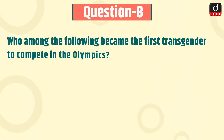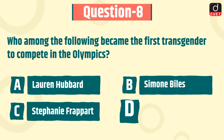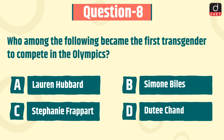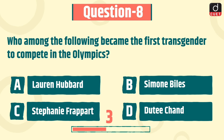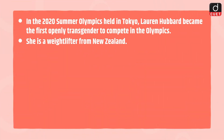The next question is: who among the following became the first transgender to compete in the Olympics? Lauren Hubbard, Simone Biles, Stephanie Frappart, or Dutee Chand? The correct answer is option A, Lauren Hubbard. In the 2020 Summer Olympics held in Tokyo, Lauren Hubbard became the first openly transgender athlete to compete in the Olympics. She is a weightlifter from New Zealand.